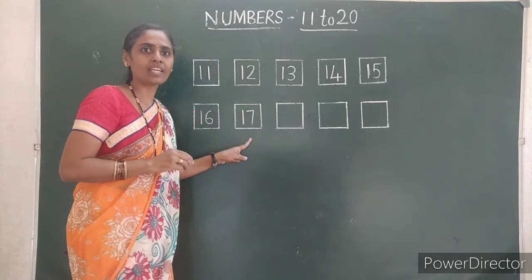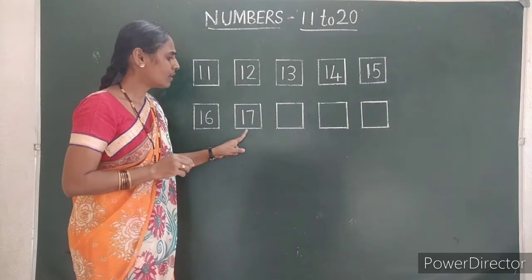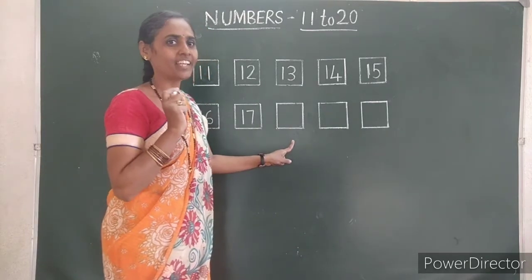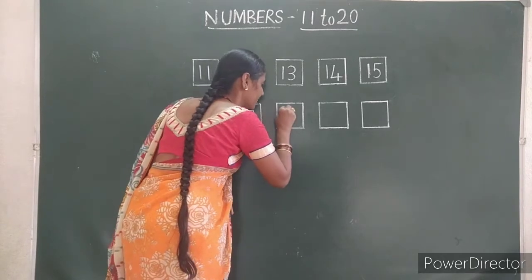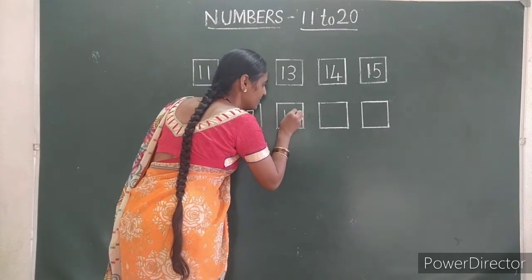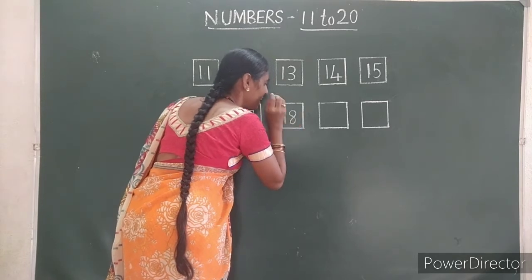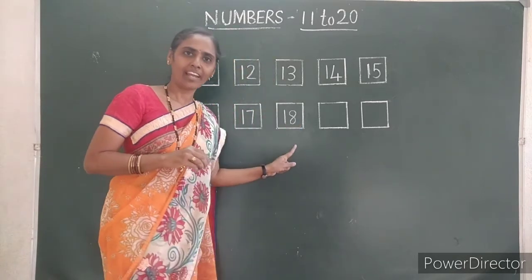Seventeen. Eighteen. After seventeen, the number will come eighteen. Eighteen. Eight. Eighteen.